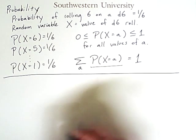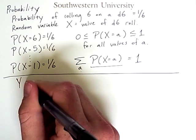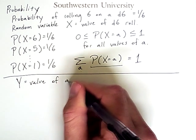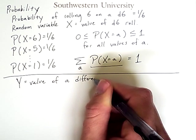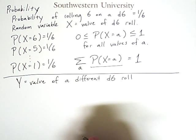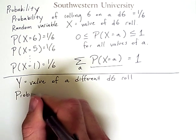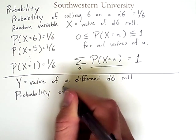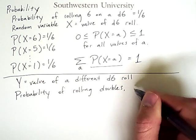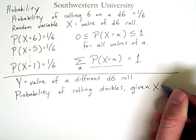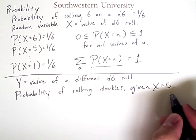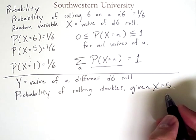Now, let's say we have a second die, and we'll use a random variable Y to distinguish the two, value of a different D6 roll. And you may want to ask, what is the probability of rolling doubles given that X equals 5? So, we have two die that we're rolling. One of them already came out to 5. And so, what is the probability of rolling doubles?